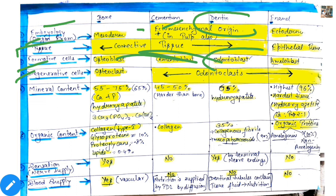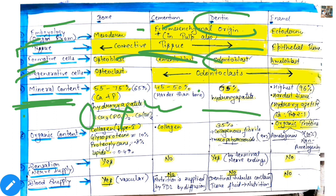Then degenerative cell — what is dentine? Odontoblast. Along with that, mineral contents. Because when you have physical and chemical structure, you have to write organic plus inorganic content. So it has inorganic content 65% and organic content 35%. We will discuss this inorganic content and the physical and chemical properties of dentine.